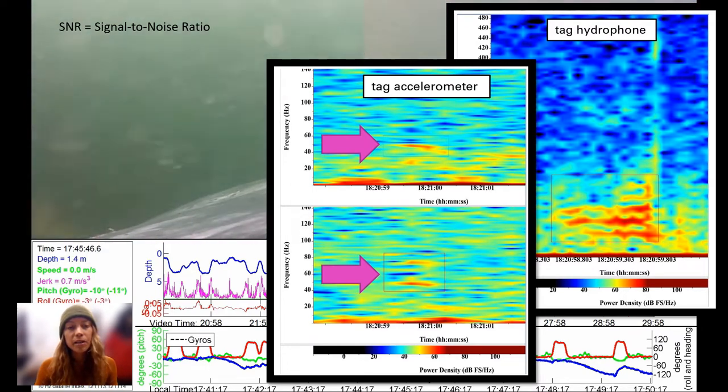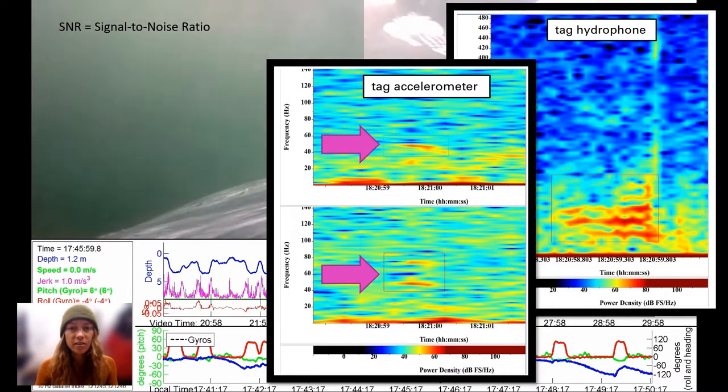If the call signature met certain thresholds, such as being orally distinct and apparent on at least two of the accelerometer axes or channels, then it was considered to have originated from the tagged whale, and the behavioral context of the call was extracted from tagged data via custom-written scripts in MATLAB.